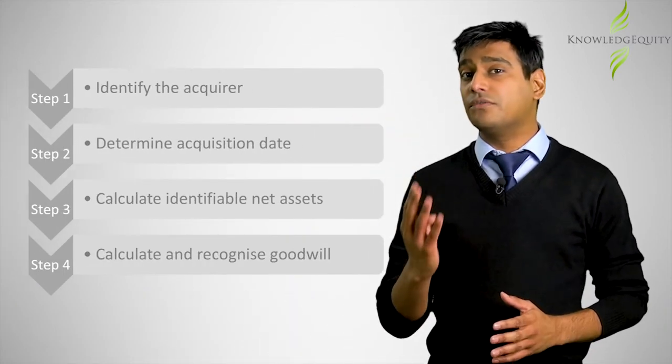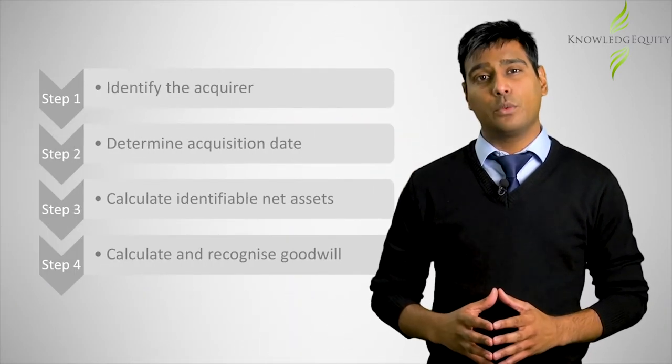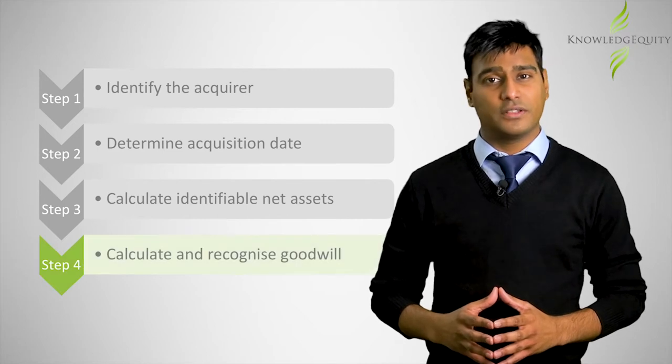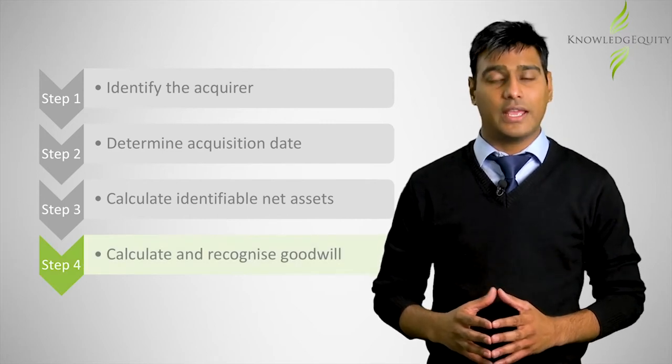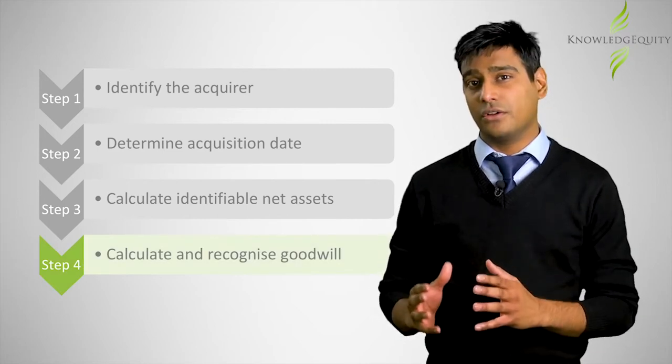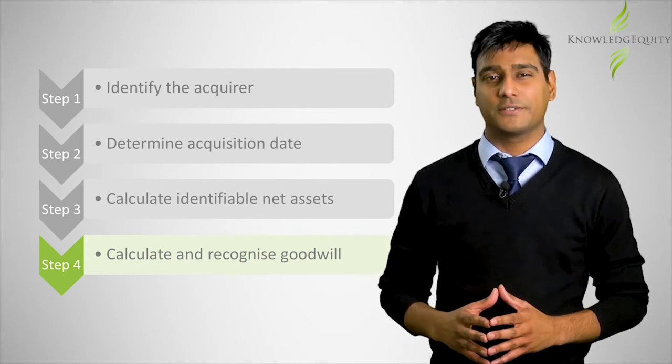All business combinations are required to be accounted for using the acquisition method. The acquisition method consists of four steps. Here we focus on the fourth step, which is the calculation and recognition of goodwill or bargain purchase.